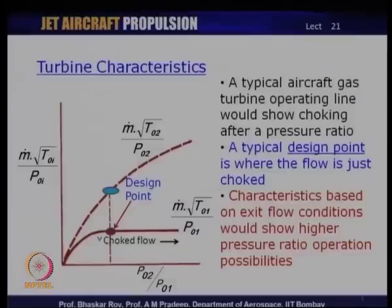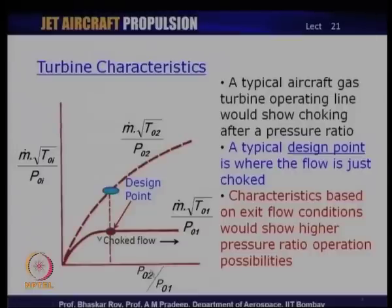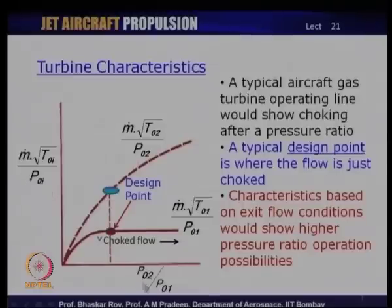The turbine characteristics as given in this map are typically drawn with a mass flow parameter on the y-axis and the pressure ratio across the turbine as the x-axis. This is slightly different from compressors, where typically the pressure ratio is shown on the y-axis and the mass flow parameter on the x-axis. So in the case of the turbine, the two axes are essentially switched around.